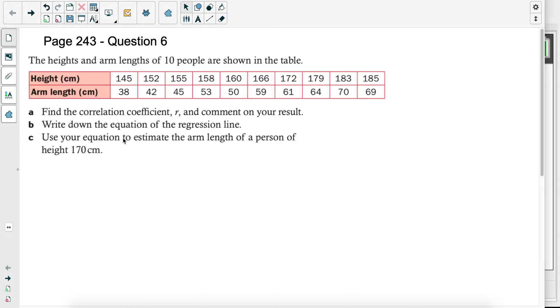We have the height and arm length of 10 people shown in the table. I just want to point out that we generally refer to the first row as X and the second as Y. If you have a vertical table, then the first column will be X, the other will be Y. Always go in alphabetical order. So it's good to point this out in the beginning.